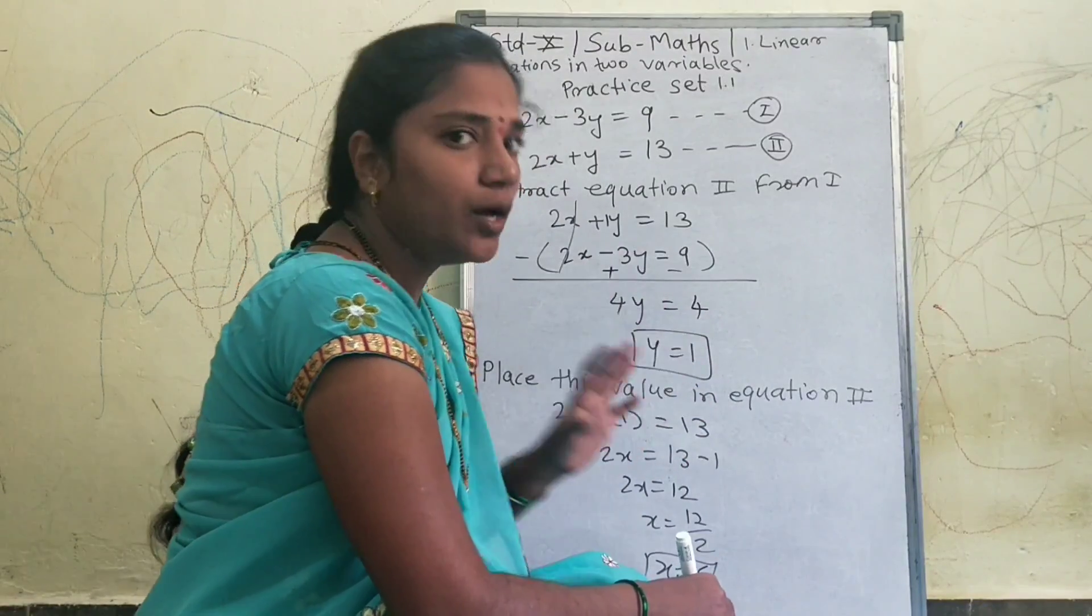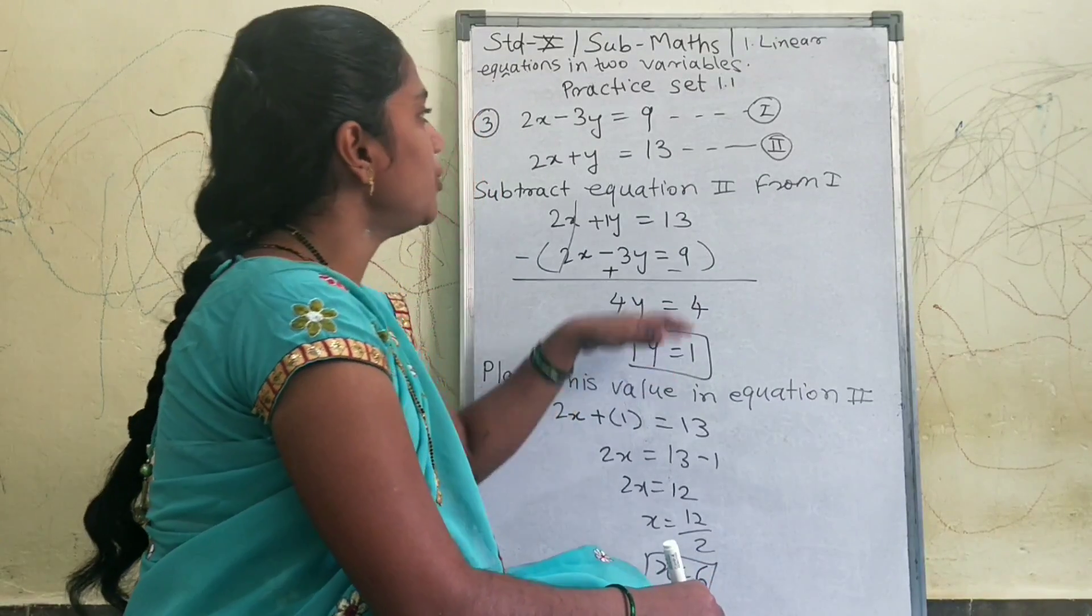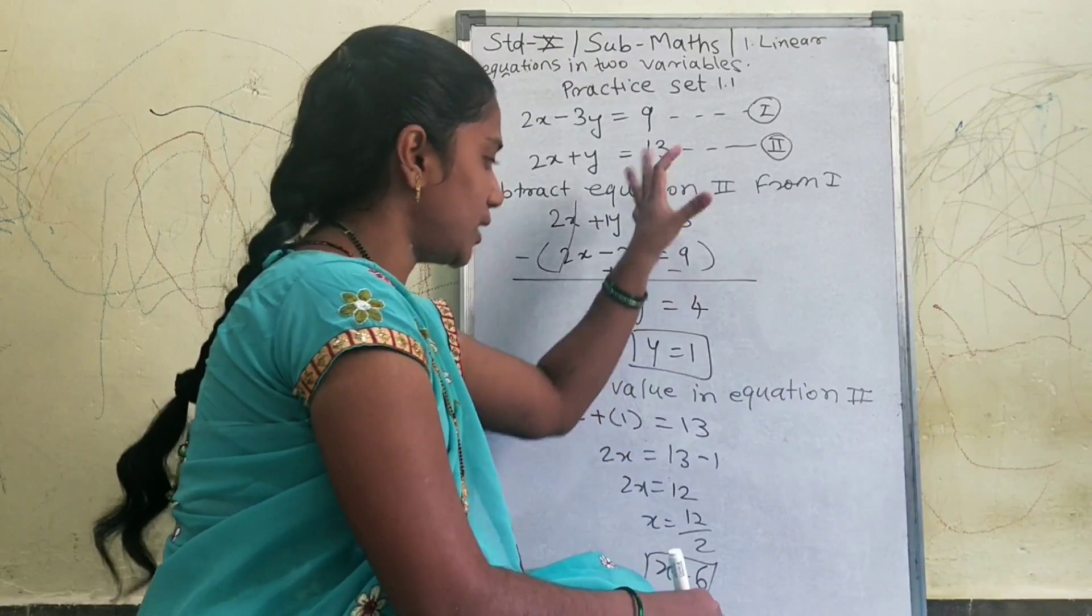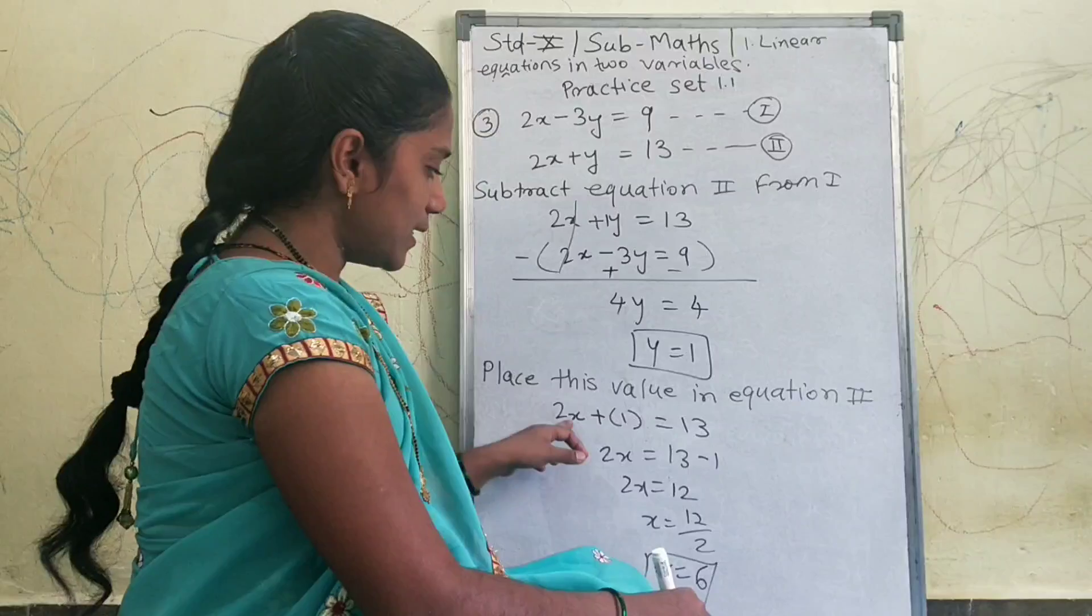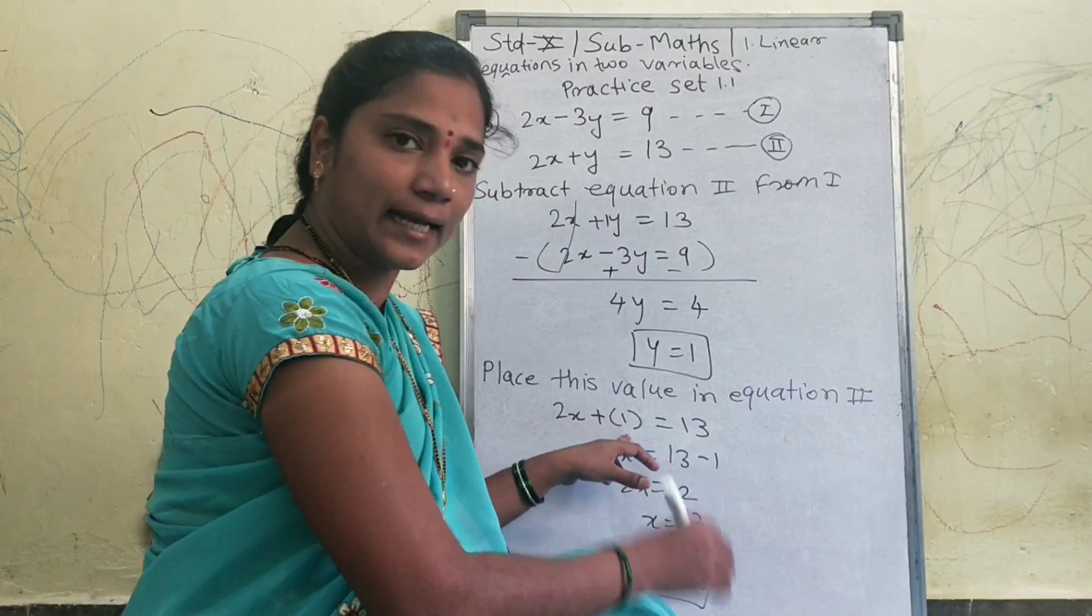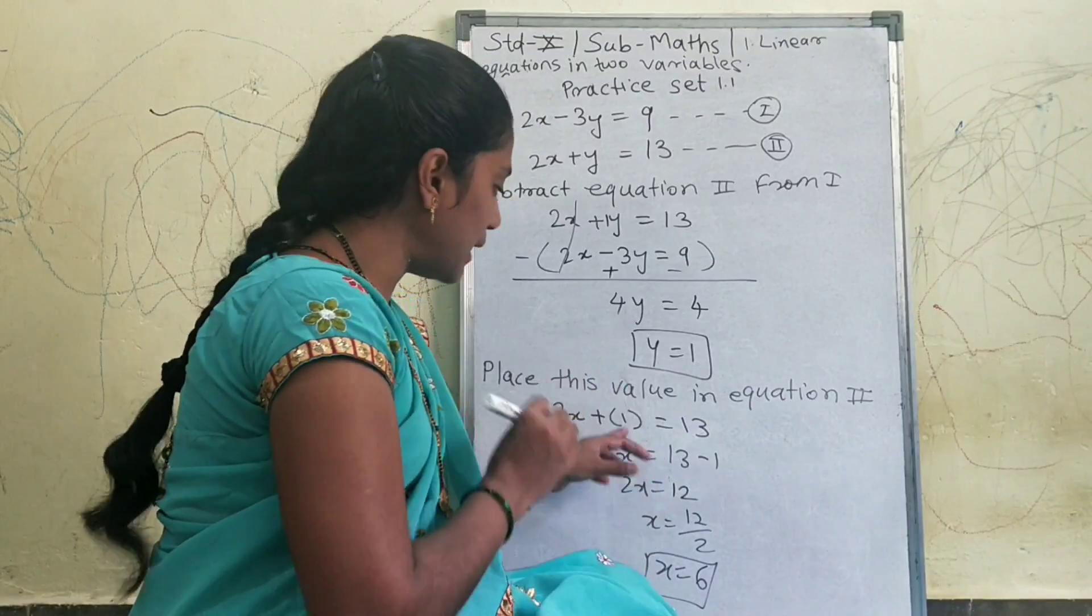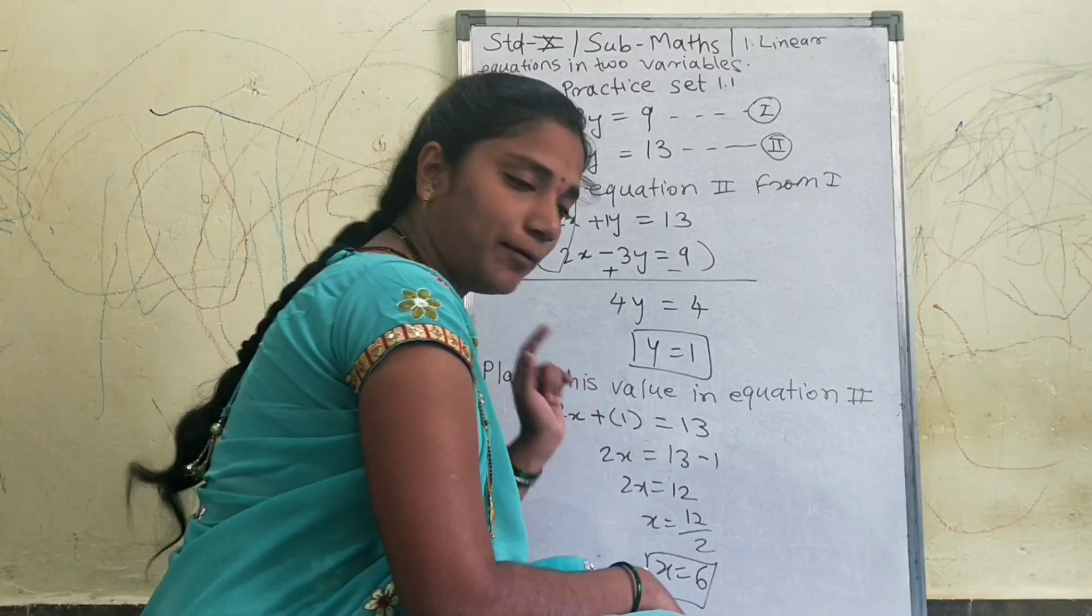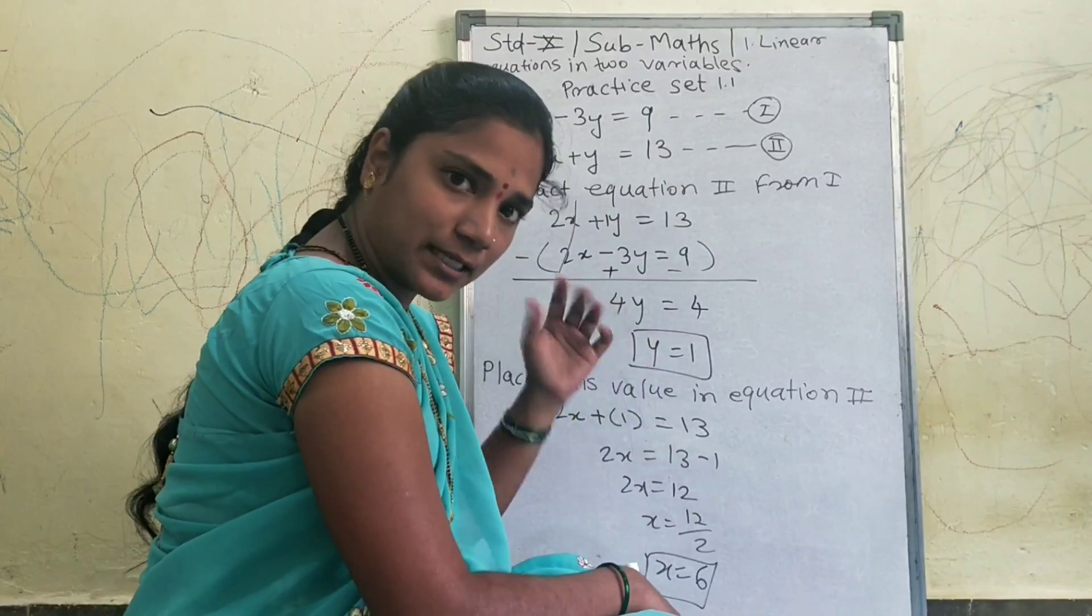Now we divide, equal to sign's opposite, 4 divided by 4, that is why my answer will be y is equal to 1. Now what to do next? I put this value in equation 2. Place this value in equation 2, my equation will be coming this way.